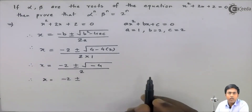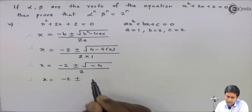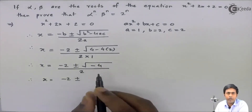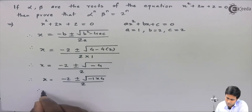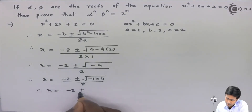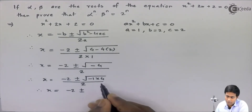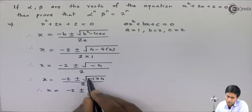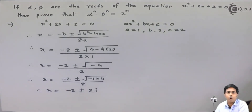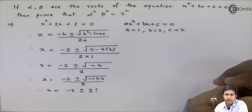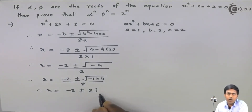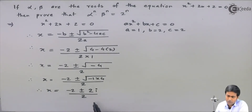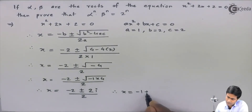We know that we cannot find the square root of a negative number directly. So we split the negative number into two parts: √(−4) = √(−1 × 4) / 2. The square root of 4 is 2, and the square root of −1 is i, from the definition of complex numbers. This gives 2i / 2. The 2s cancel, so x = −1 ± i.